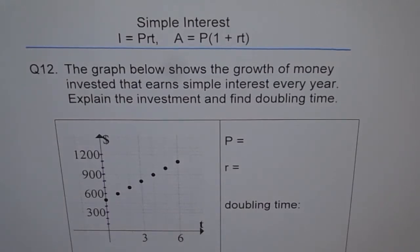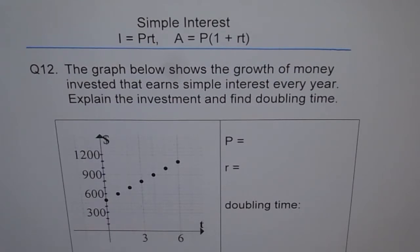Simple interest question 12 — we are almost at the end of the simple interest question bank. Question 12 says: the graph below shows the growth of money invested that earns simple interest every year. Explain the investment and find the doubling time. So basically it's a communication question — you look at the graph and identify the critical things you should be talking about.